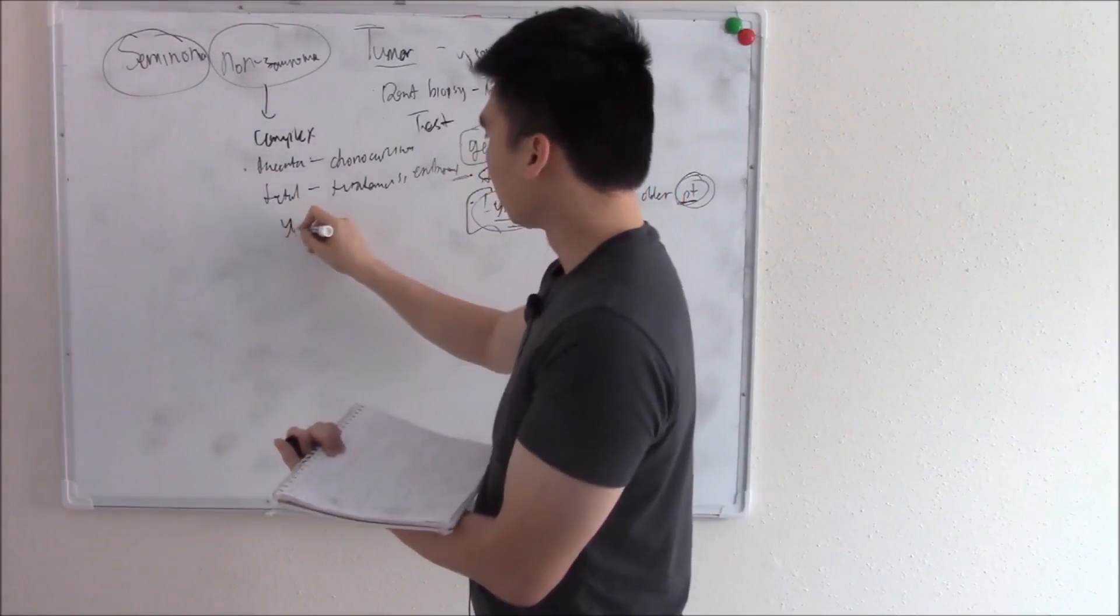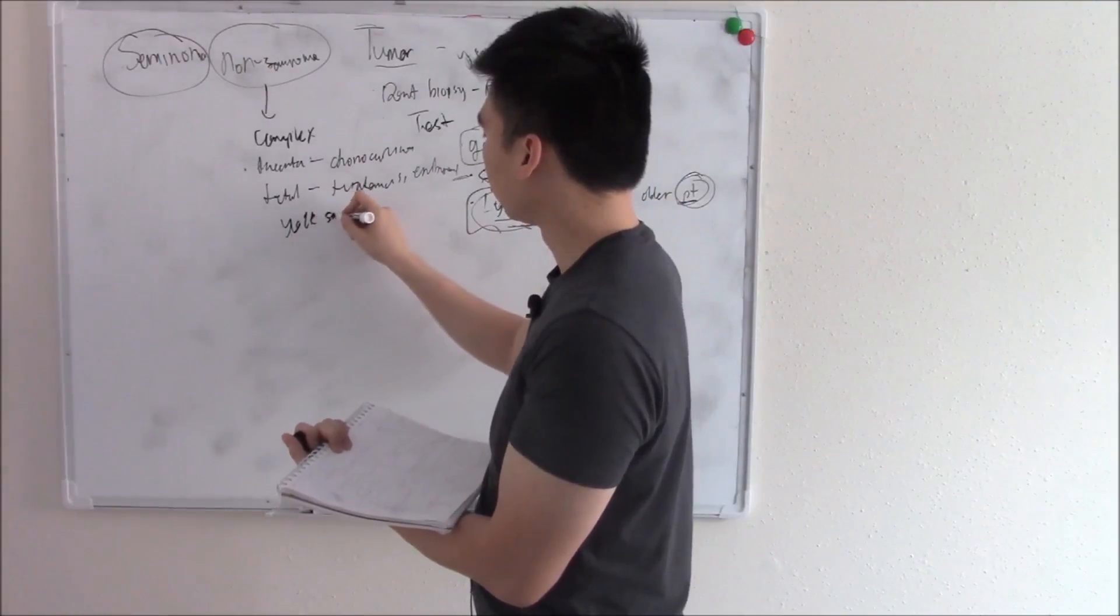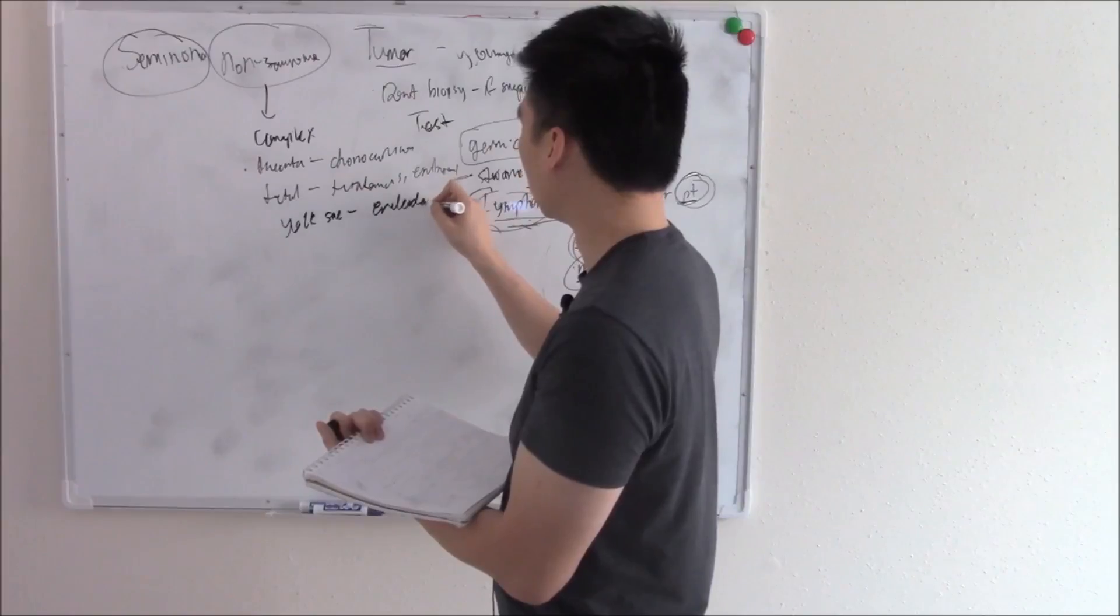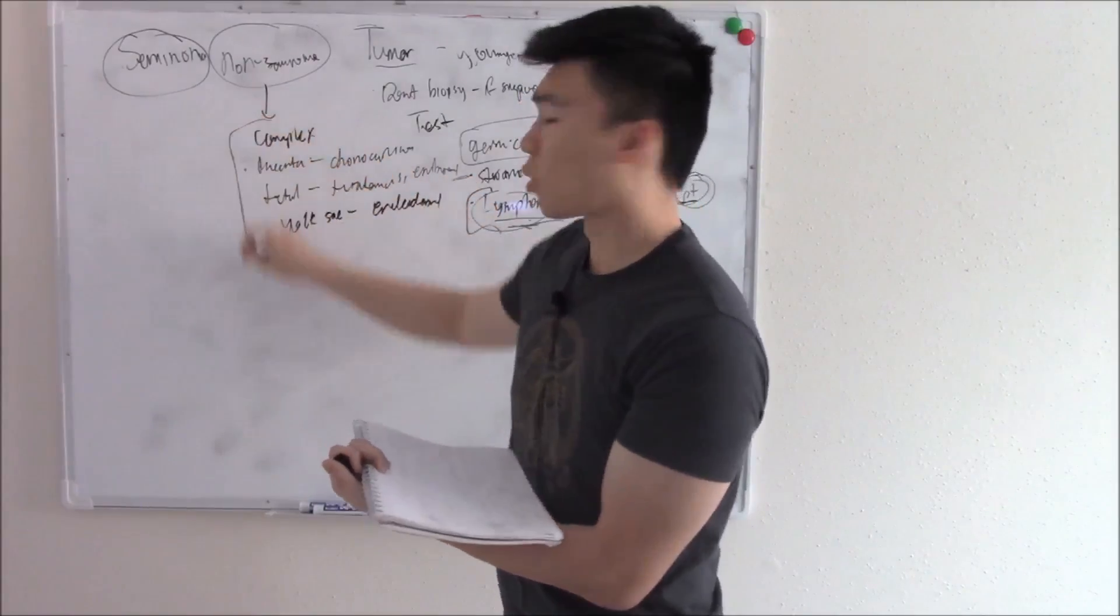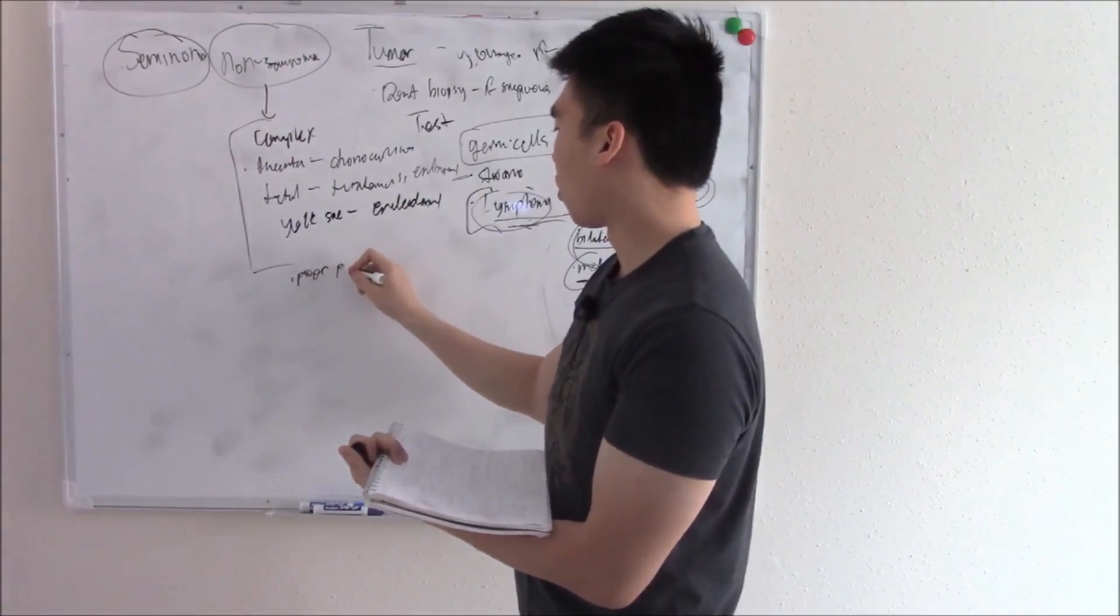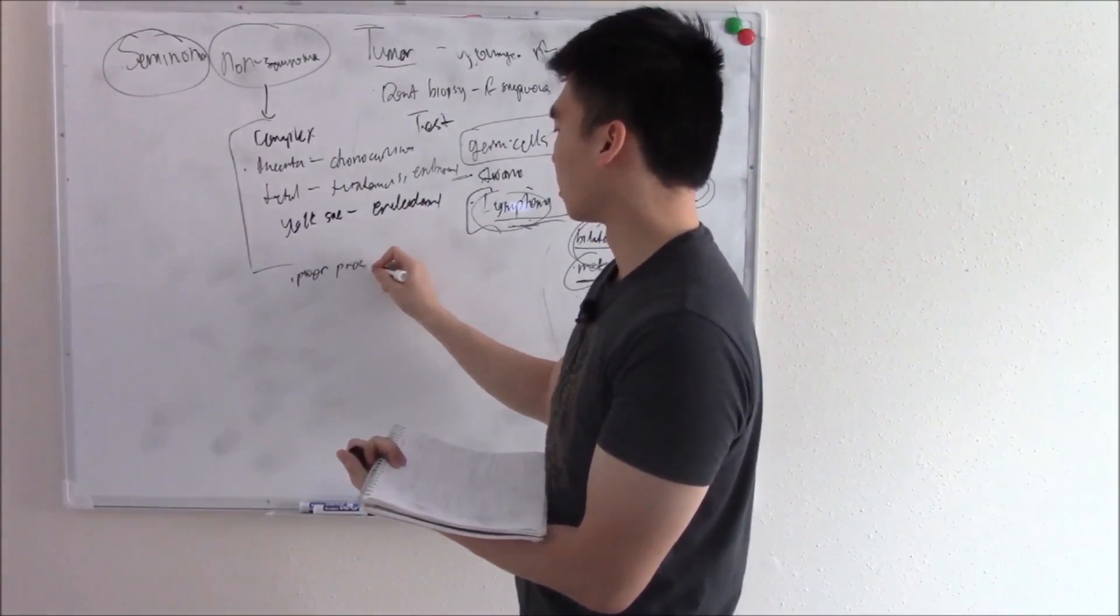It can come from yolk sac tissue and make endodermal tumors. So these are more complex and unfortunately they have a poorer prognosis.